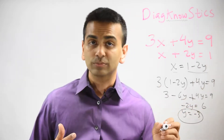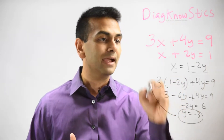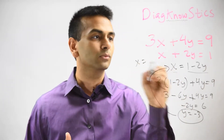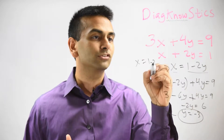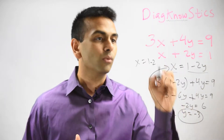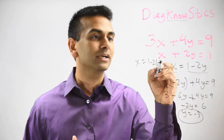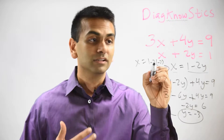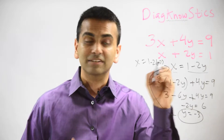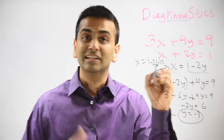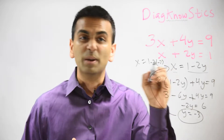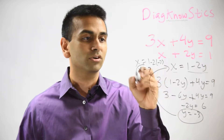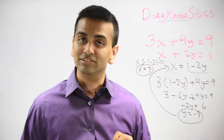Once we have y, we can plug it back in. We knew x equals 1 minus 2y, and y is negative 3, so x equals 1 minus 2 times negative 3, which is 1 minus negative 6, which is really 1 plus 6. So x equals 7.